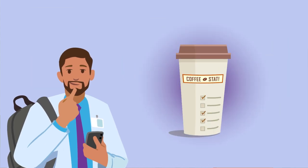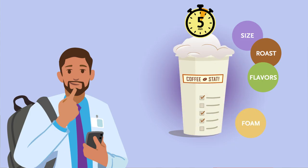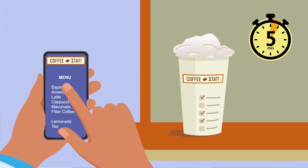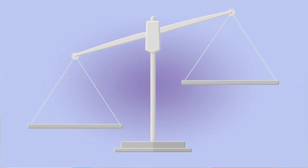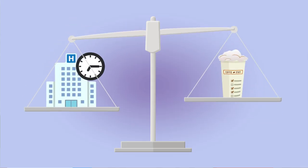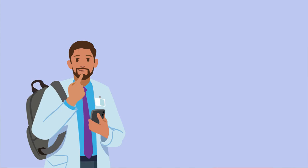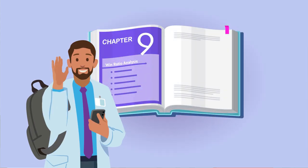There are a lot of variables to consider. Getting your coffee quickly matters a lot. So does getting the order right. And so does having the right amount of foam. What if an app-order coffee sits too long before you make it there? The foam on your cappuccino might have collapsed. As you think about how to weigh all these outcomes considering their relative importance — getting to clinic on time matters more than your coffee's foaminess — you realize this sounds like a question to approach with a win-ratio analysis.